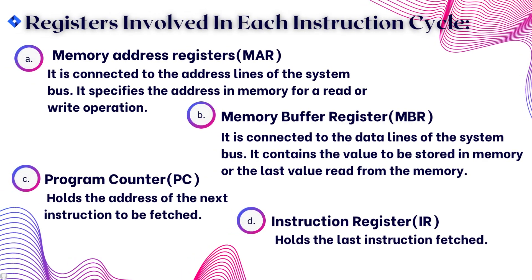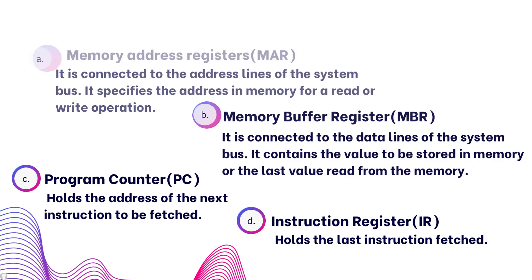Let's start with the registers involved in each instruction cycle. The first one is the Memory Address Register (MAR), which is connected to the address lines of the system bus and specifies the address in memory for a read or write operation. Second is the Memory Buffer Register (MBR), connected to the data lines of the system bus, containing the value to be stored in memory or the last value read from memory. Third is the Program Counter (PC), which holds the address of the next instruction to be fetched. The last one is the Instruction Register (IR), which holds the last instruction fetched.